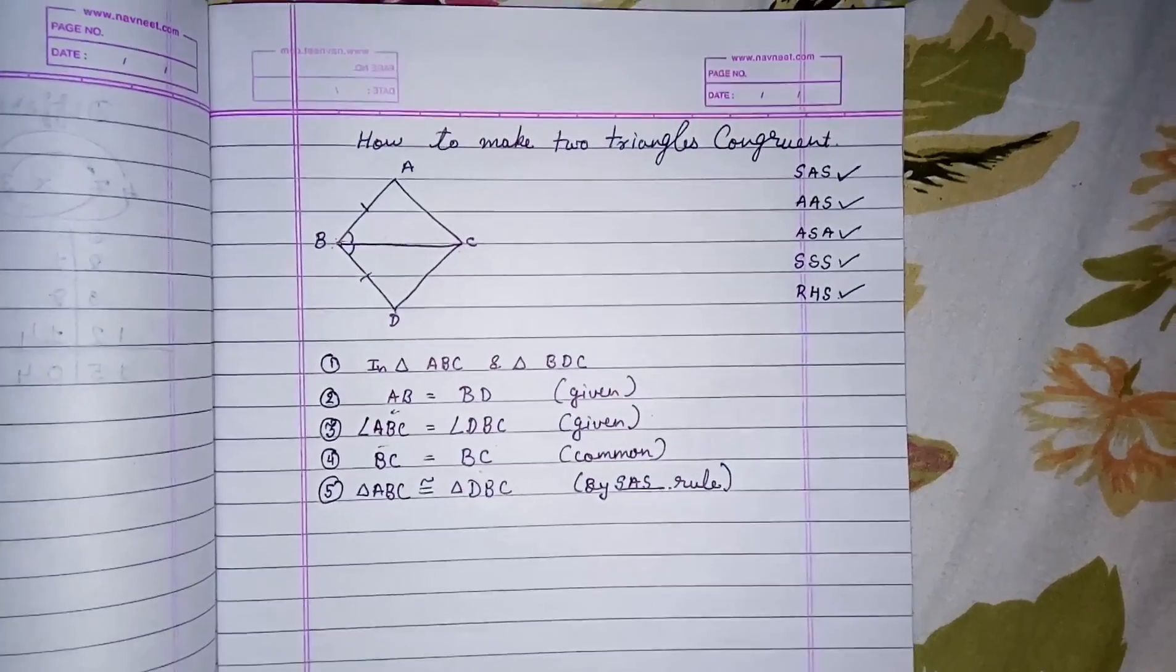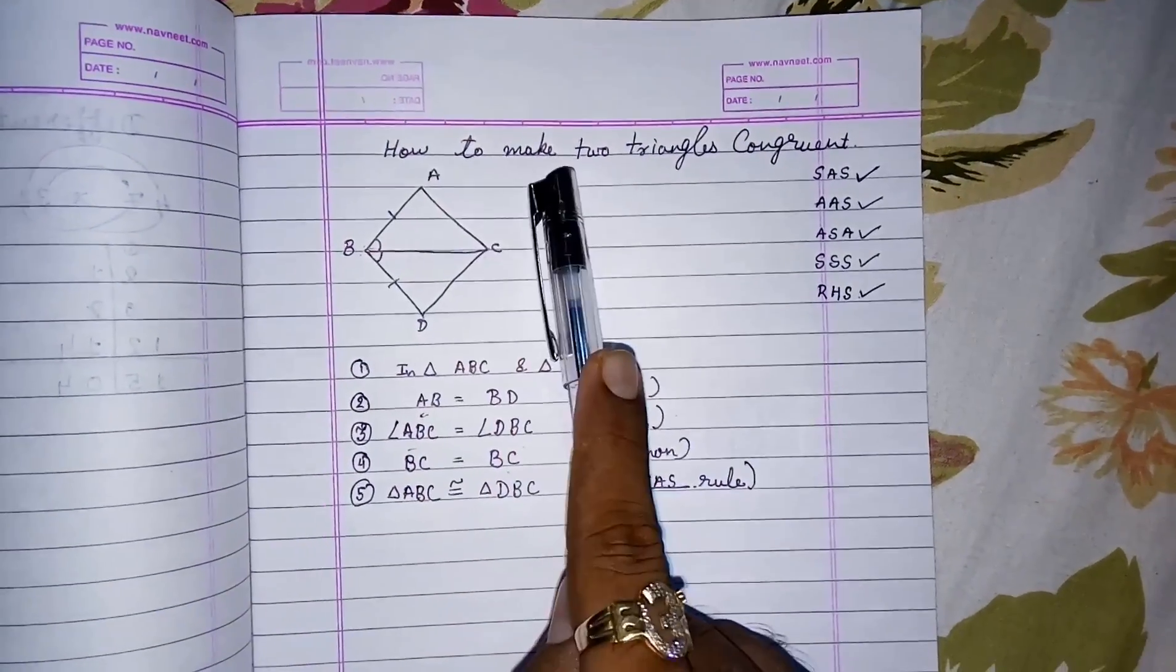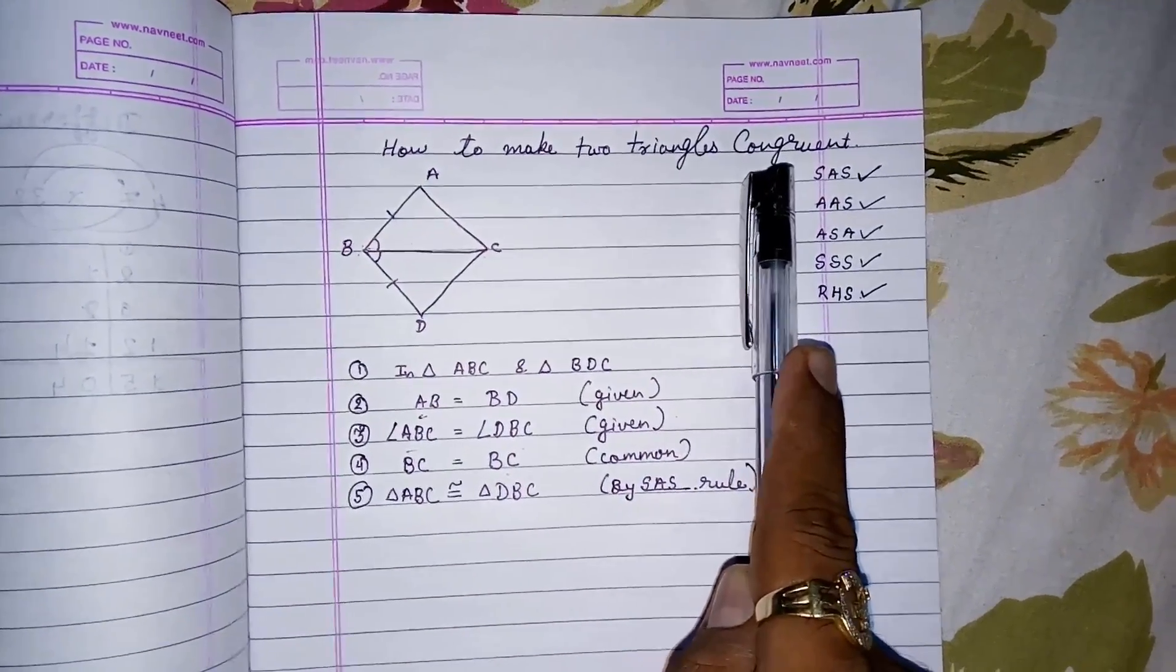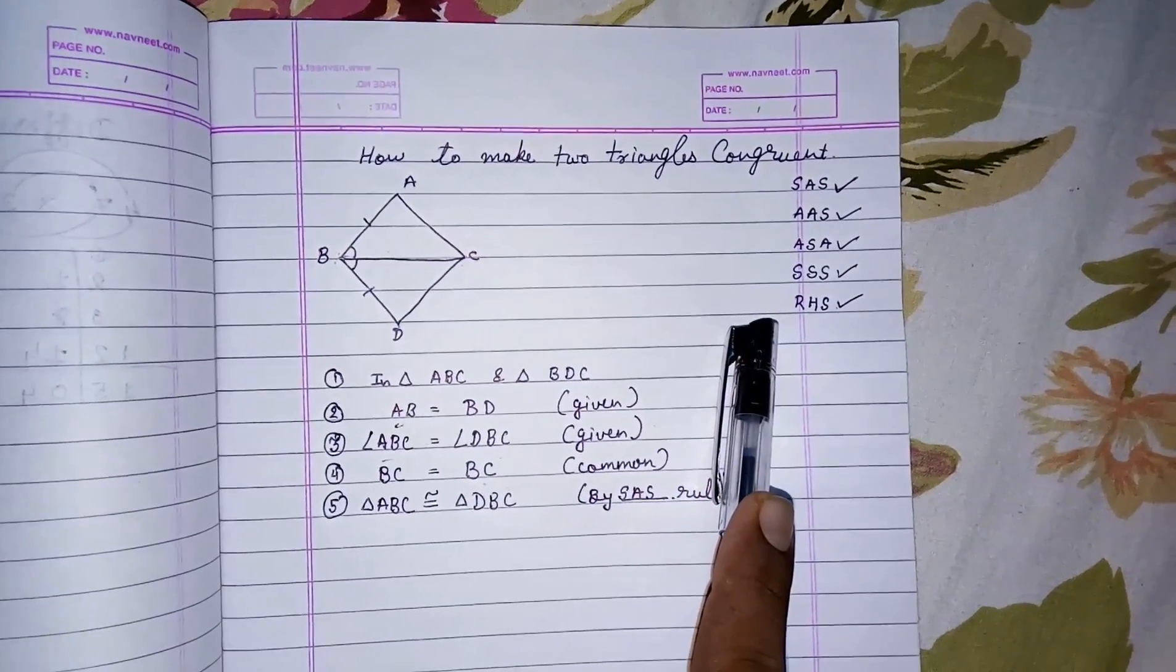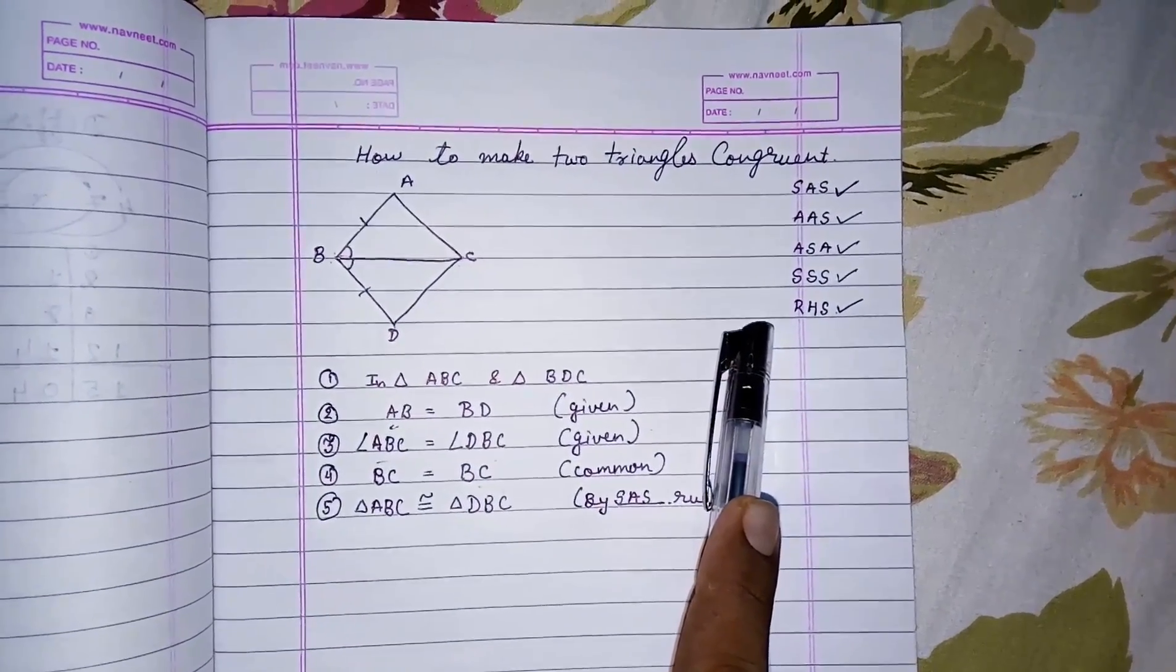Hello friends, today we are going to study how to make two triangles congruent. We have five simple reasons by which we can make any two triangles congruent.